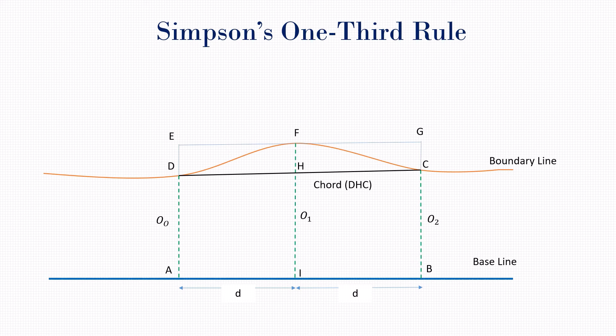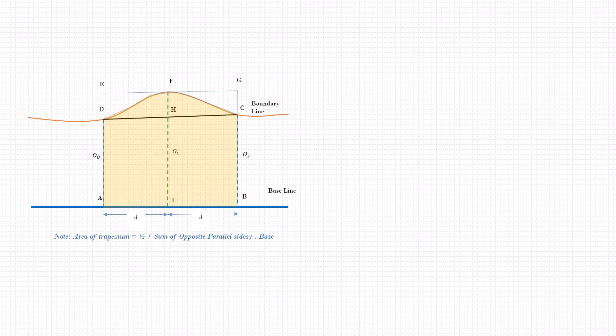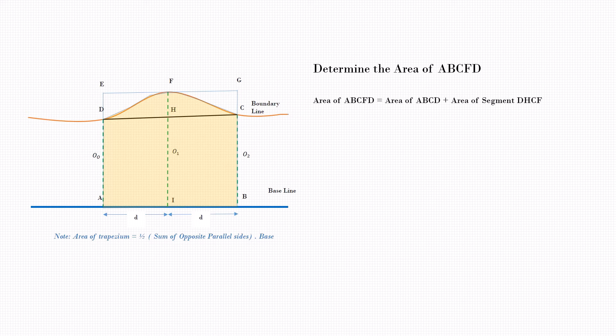We consider a baseline AB from which the offsets are taken perpendicular and parallel to each other. They form O0, O1, and O2 as shown in the figure. The corresponding chord of the parabolic curve DFC is DC. This will finally give a trapezoid and a segment. Hence, the total area of the shaded portion needed to be determined is given as: total area = area of trapezoid + area of segment, i.e., area of ABCFT = area of ABCD + area of segment DHCF.